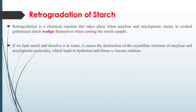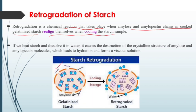The next topic is retrogradation of starch. Retrogradation, I would say, is opposite to gelatinization in mechanism. Retrogradation will occur after the gelatinization process. Retrogradation is a chemical reaction that takes place when amylose and amylopectin chains in cooked, gelatinized starch realign themselves when cooling the starch sample. In simple terms: after gelatinization, where amylose has leached out from the starch granules, when we cool and store the sample, this amylose will try to re-enter and realign with other amylose inside, forming parallel alignment while water molecules leach out.